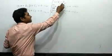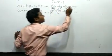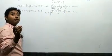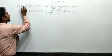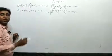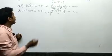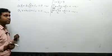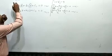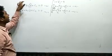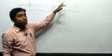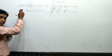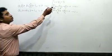A linear equation in two variables means the equation has degree one and involves two variables, x and y. This is Chapter 3, Pair of Linear Equations in Two Variables.